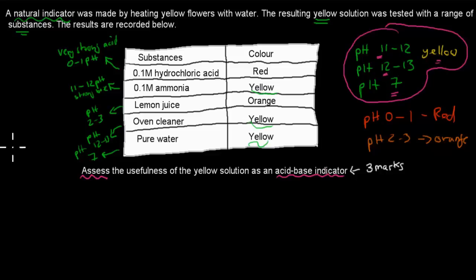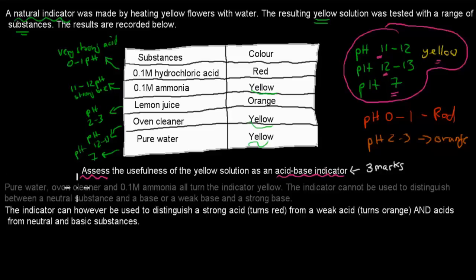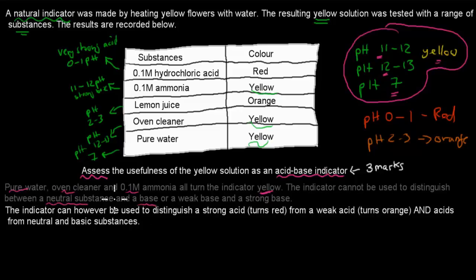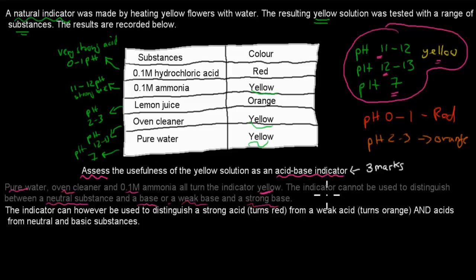So we can't distinguish between neutral substances and basic substances using this indicator. Pure water, oven cleaner, and 0.1 molar ammonia all turn the indicator yellow. The indicator cannot be used to distinguish between a neutral substance and a base, or between a weak base and a strong base, since pH 11 to 12 and pH 12 to 13 both give yellow.